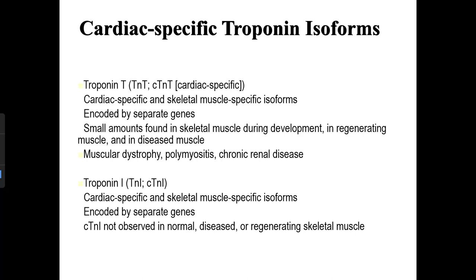Cardiac-specific troponin isoforms: troponin T (cTnT) is cardiac-specific, with cardiac and skeletal muscle forms encoded by separate genes. Small amounts are found in skeletal muscle during development, regeneration, and in diseases such as muscular dystrophy, polymyositis, and chronic renal disease. Troponin I (cTnI) is also cardiac-specific, with cardiac and skeletal muscle forms encoded by separate genes; cTnI is not observed in normal, diseased, or regenerating skeletal muscle.